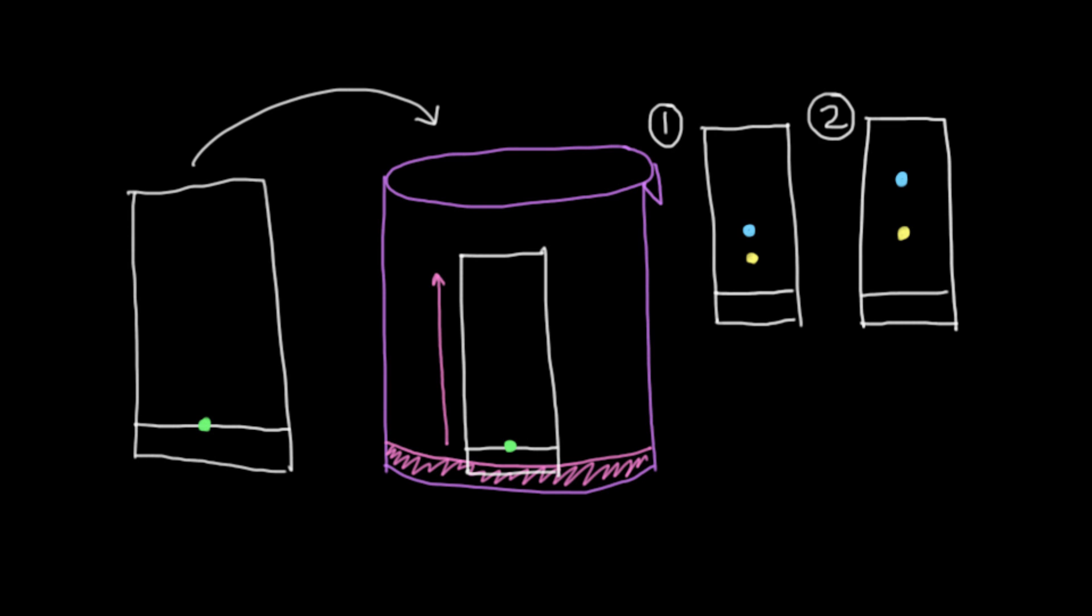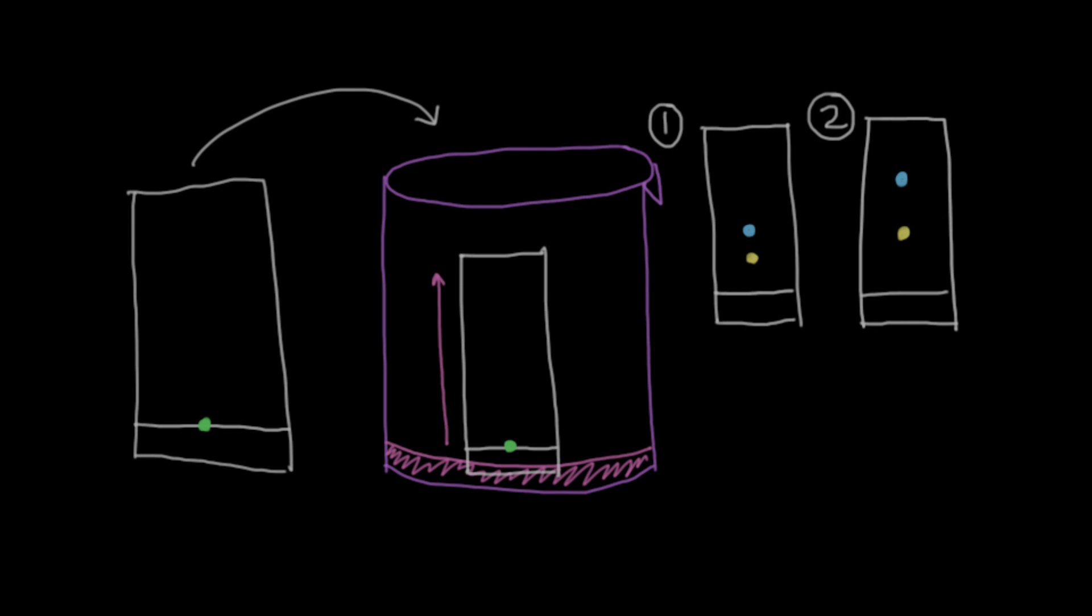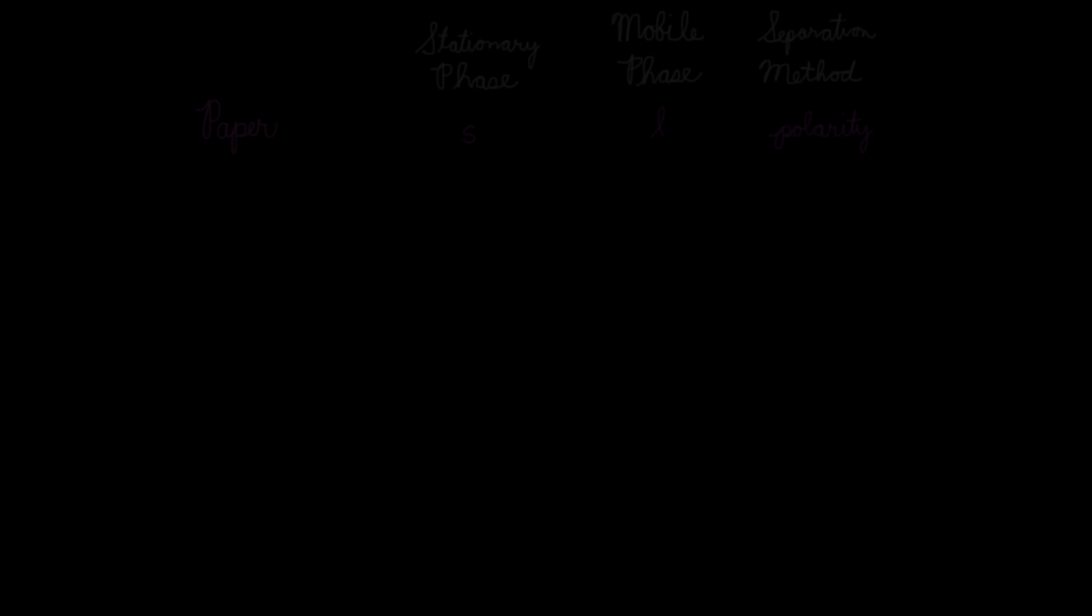So let's try to lay this information out in a table. We've talked about how for paper chromatography, the stationary phase is a solid, the mobile phase is some kind of solvent, so a liquid, and they're separating it based on polarity, meaning how attracted it is to the paper versus the solvent, depending on its chemical properties.